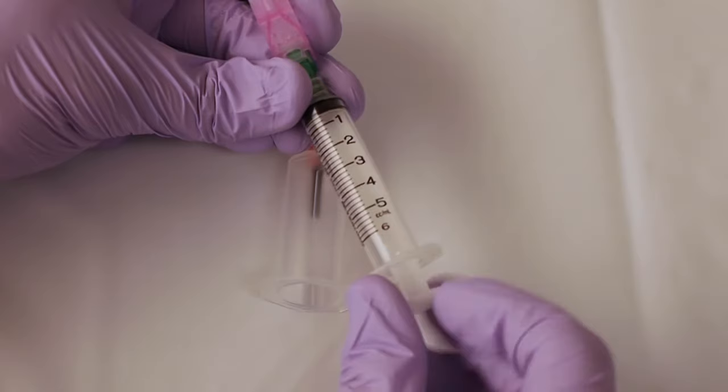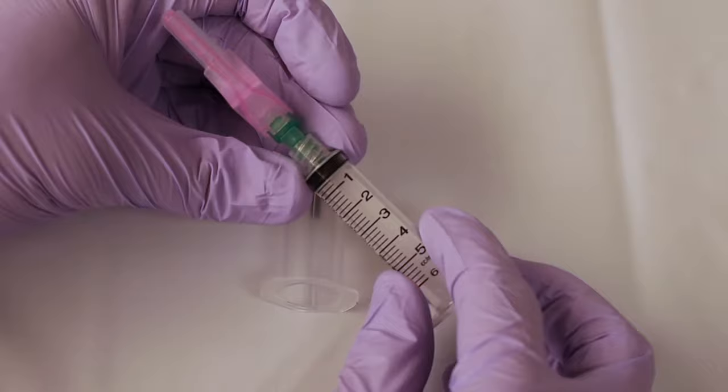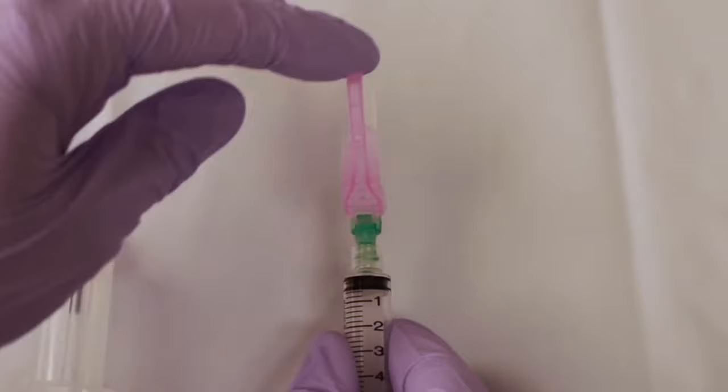Make sure it's at zero. You never want to start anywhere other than zero. Now we're ready to start the draw. The first thing you're going to do is you're going to pull back on the safety lock and you can uncap the needle.